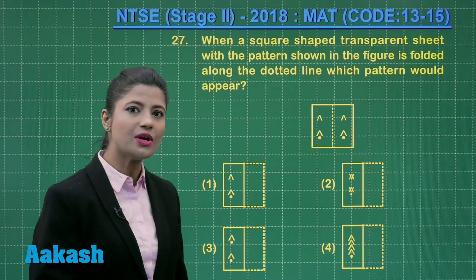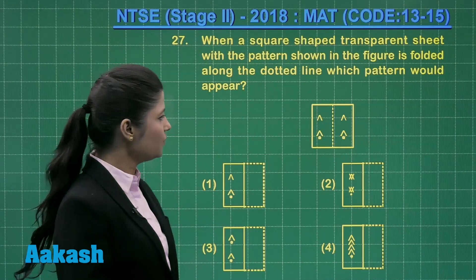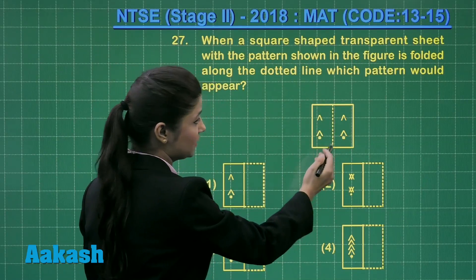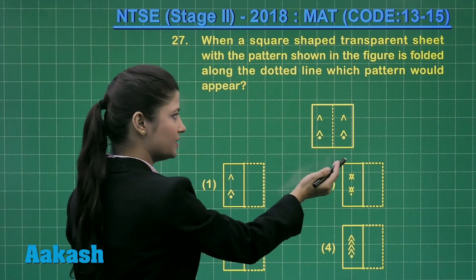This is a very interesting question related to paper folding. You can observe here we have this dotted perforated line where you fold this paper on this side.